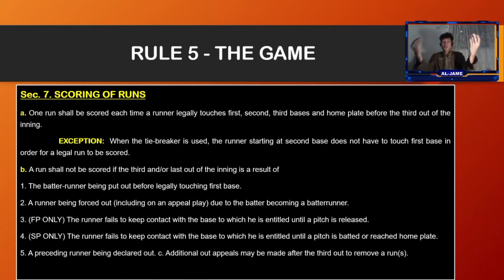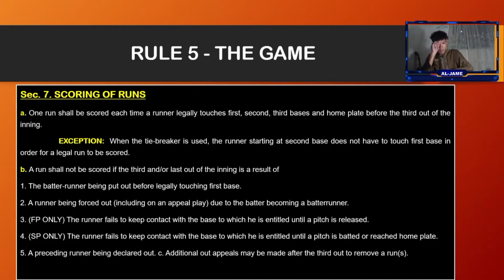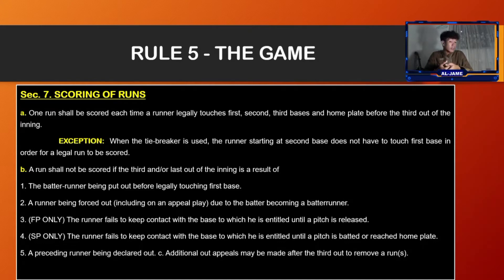Section number seven, scoring of runs: one run shall be scored each time a runner legally touches first, second, third base, and home plate before the third out of the inning. Exception for the tiebreaker: the runner starting at second base does not have to touch first base. A run shall not be scored if the third and last out of the inning is a result of certain situations.